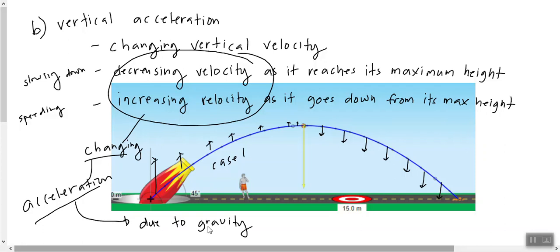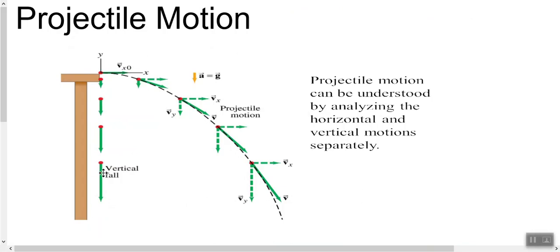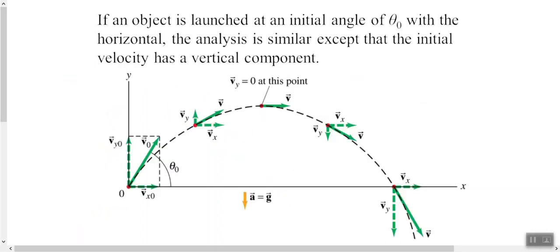Based on this picture, one object was dropped and one was projected horizontally — they both land at the same time. We can say that projectile motion is made up of two components: the speed in the x-direction is constant, and the y-direction has a constant acceleration but changing velocity. Projectile motion is understood by looking at the horizontal and vertical components.